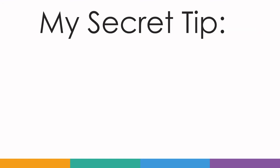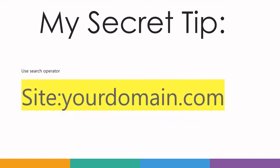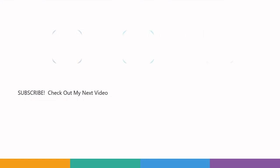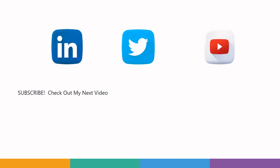My secret tip to find duplicate content on your website within two minutes is to use the search operator 'site:' followed by your domain name. Using this operator you can find all the pages indexed by search engines, understand how Google is indexing your pages and your site architecture, and identify whether Google is indexing any duplicate pages. I hope you learned something new from this video. If you found it useful, please subscribe to this channel, ask your questions, and make the channel more engaging. See you in another very useful video!